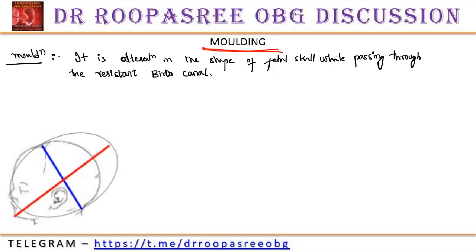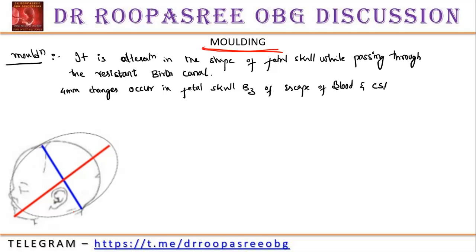About 4 mm of changes occur in the fetal skull because of escape of blood and cerebrospinal fluid. What is the mechanism? When there is alteration in the fetal skull, some amount of blood and cerebrospinal fluid will escape so that the head easily passes through the resistant birth canal.